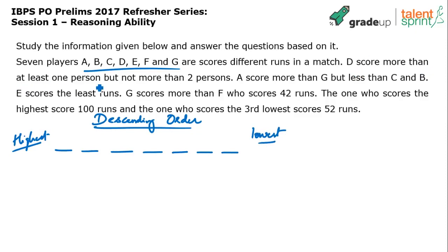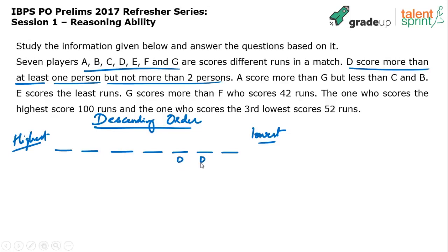D scored more than at least one person but not more than two persons. D cannot come in the last position because then he would be scoring the least and not more than anyone. For D to score more than at least one person, D should take the second position from the lowest end — scoring more than one person.